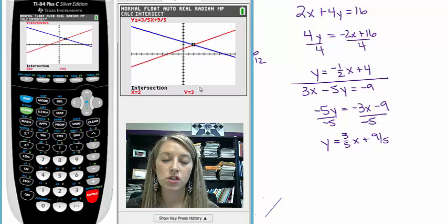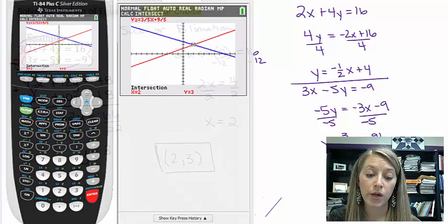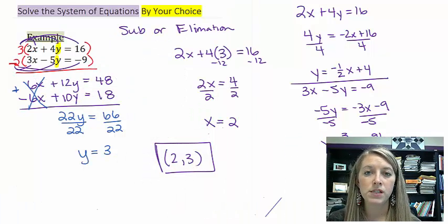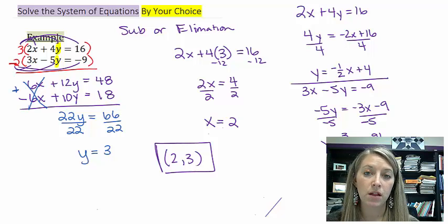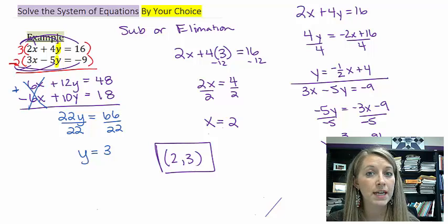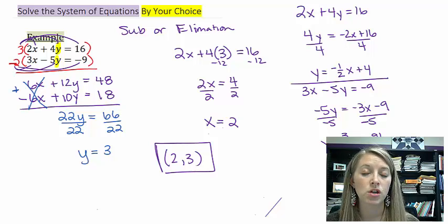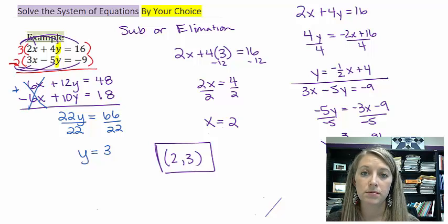And so this is just working through a second example of solving the system of equations by your choice, meaning the choice of substitution or elimination. Now, I chose to do this one by elimination. If you chose to do it by substitution, it should have worked out that you got the exact same answer. If you didn't, double check your math to figure out where your mistake is.